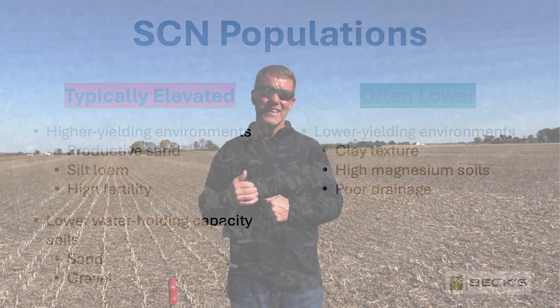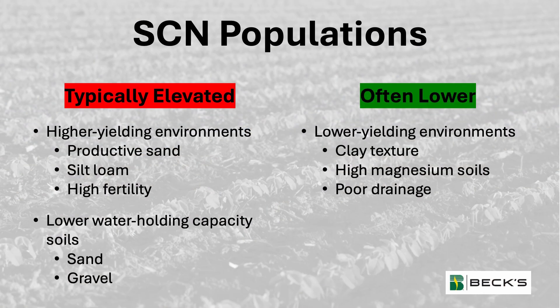The number one robber of U.S. soybean production in terms of yield is actually soybean cyst nematode. However, our populations throughout our fields will vary rather significantly. Many times the environments that lead to higher productivity — like higher fertility, silt loams, productive sands — are oftentimes where we find our highest populations. We also see elevated populations in pure sands and gravel as well.